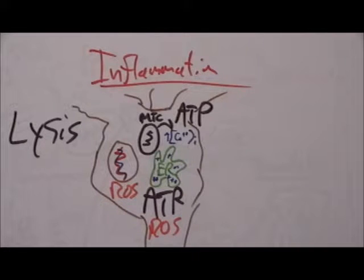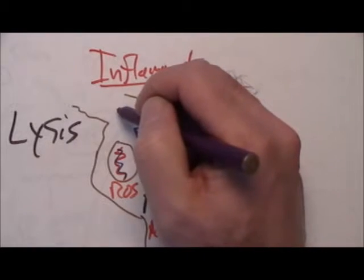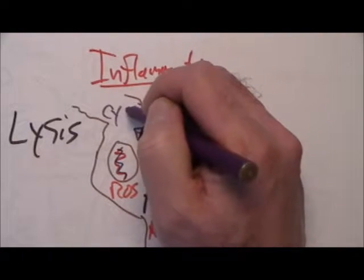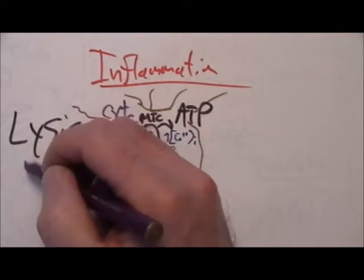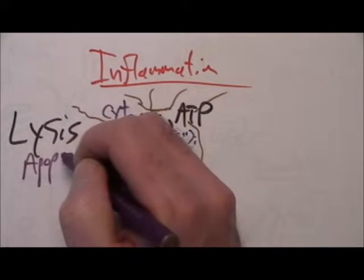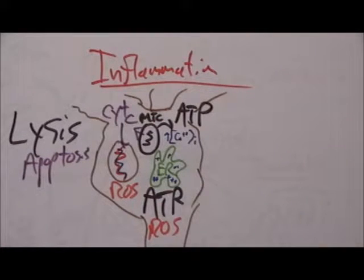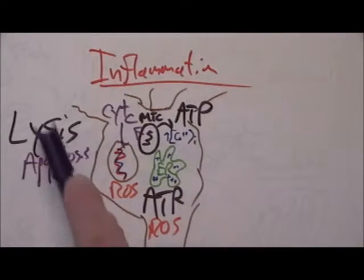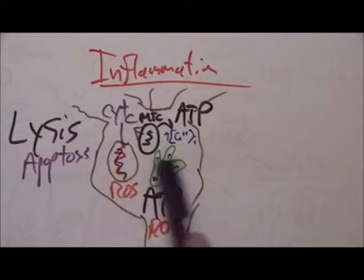The reactive oxygen species can also lead to, or sorry, the activation of mitochondria can also lead to cytochrome C, and that leads to apoptosis. All right, so we have excitotoxicity, apoptotic signals, lysis, reactive oxygen species.